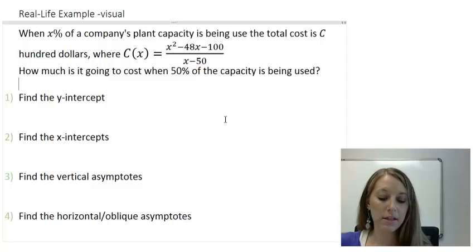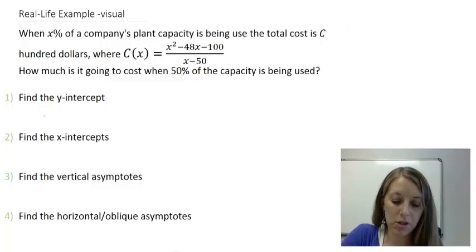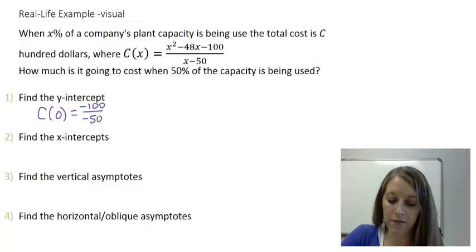So I've outlined the steps that we had before. Find my y-intercept. I do that by substituting in zero. So C of 0 gives me my constant of negative 100 over my constant of negative 50. Of course, that simplifies to give me positive 2. So I have a y-intercept of positive 2.